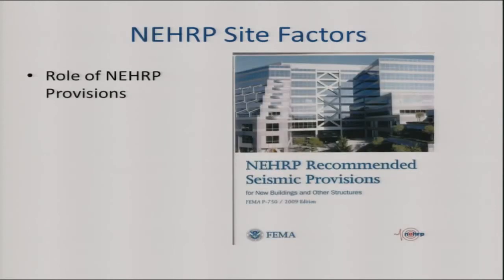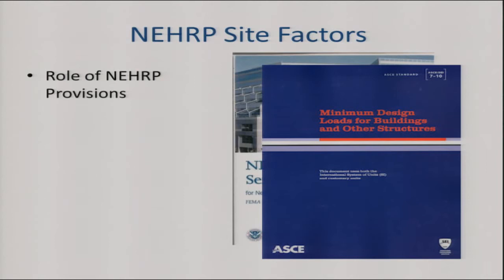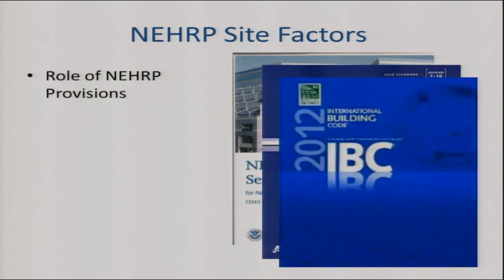Where do these site factors come from in the NEHRP provisions? NEHRP is the National Earthquake Hazards Reduction Program — an act of Congress that established a process by which new science and technology would be brought into the code writing process. New ideas come in through the NEHRP provisions; over the last few cycles that goes into ASCE 7, getting it closer to code language, and then finally into the building code — in this case the IBC. So the front end of the process is the NEHRP provisions, and you'll see them called NEHRP factors or sometimes ASCE factors.